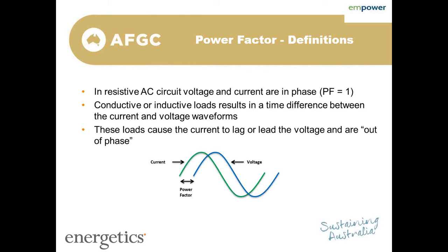We get issues arising when we have capacitive or inductive loads on site. The main loads we see are inductive loads — motors are the most common — but there's a range of others. Some, like fluorescent lights, are actually slightly capacitive. What these loads do is result in a time difference between the current and voltage waveforms. We refer to this as the current lagging or leading the voltage. When there are capacitive or inductive loads and the Power Factor is less than one, the voltage and current are said to be out of phase. The more they are out of phase, the lower the Power Factor.